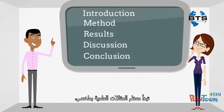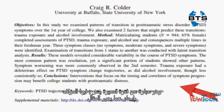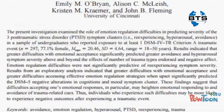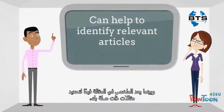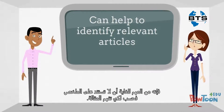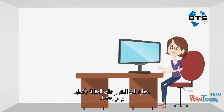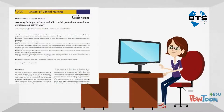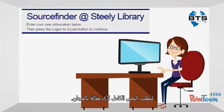Most scholarly articles begin with an abstract. This is a short paragraph in which the author briefly explains what the article is about and describes any significant findings. While the abstract can be valuable for identifying relevant articles, it is very important that you do not rely only on the abstract for your understanding of the article — you need to find and review the entire article. As an NKU student, you can use Steely Library's source finder service to request the full text of any article for free.